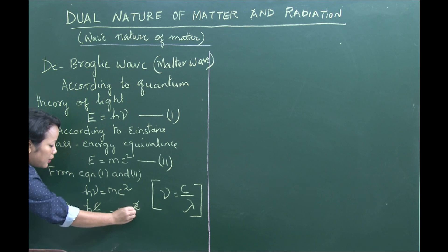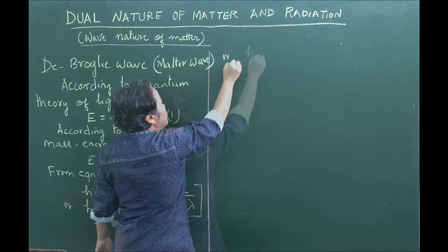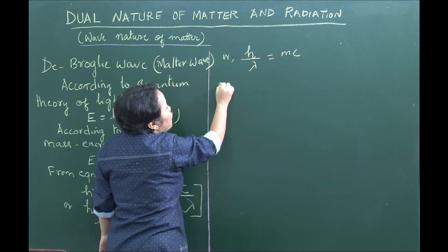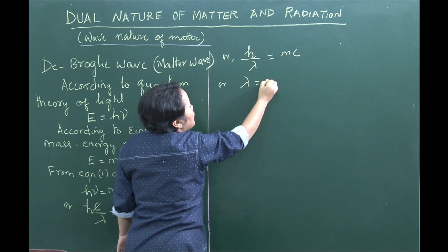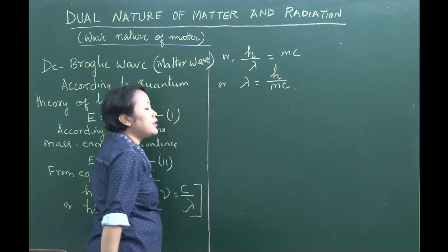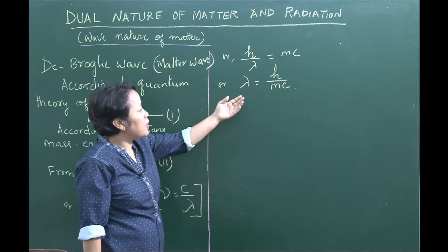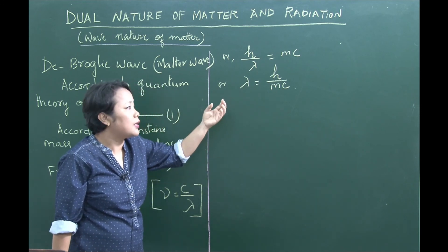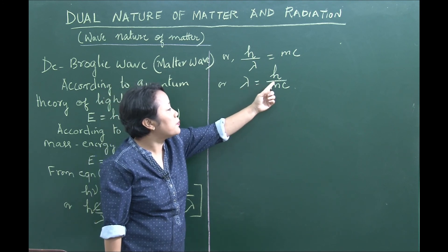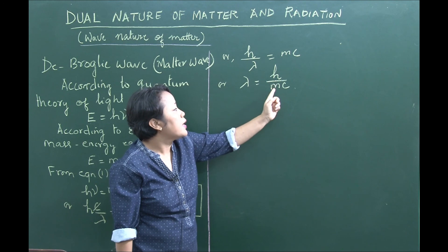We can cancel one factor of c from both sides. So H by λ equals mc. Therefore, λ equals H by mc. This is the de Broglie wave — the matter wave. For a matter particle, the wavelength is given by λ = h/mc.